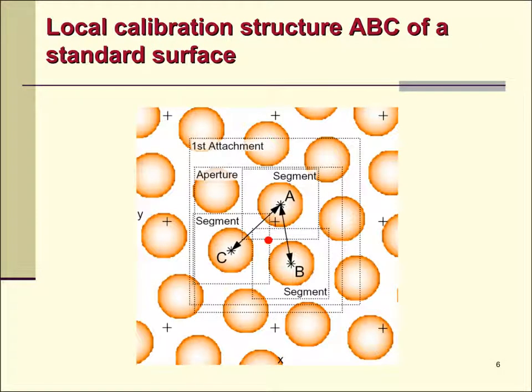Local calibration structure ABC of a standard surface. The attachment of the microscope probe to a surface feature allows capturing the feature located near the current net node and holding it within the field of view of the instrument.